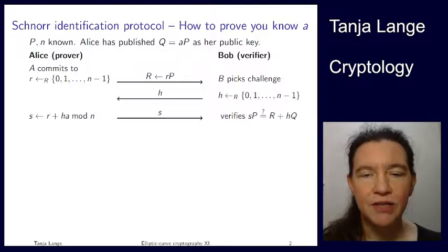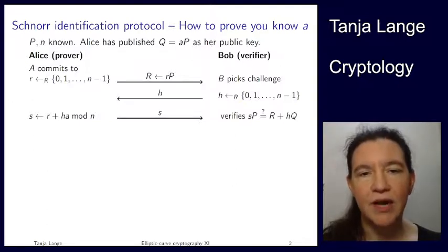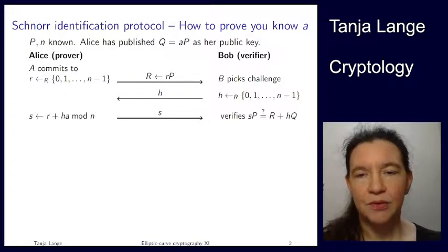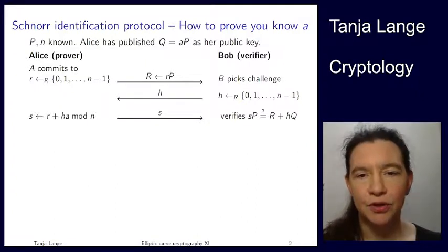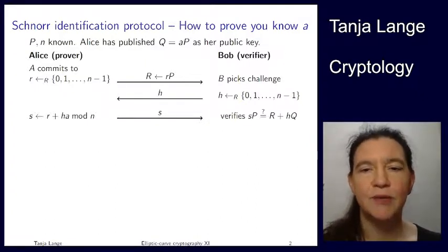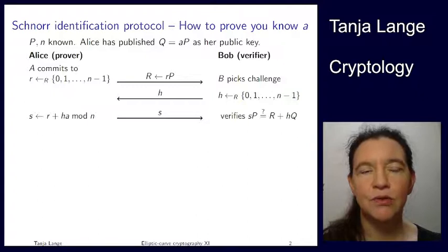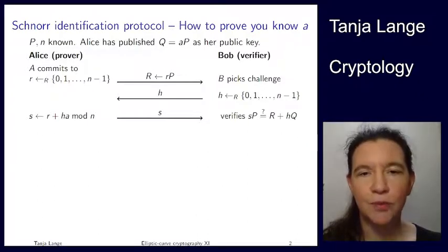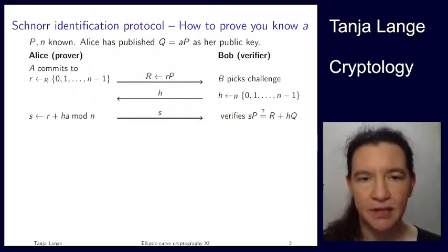An identification scheme is one where you are identified by knowing your secret key. So Alice has published her Q, which is A times P, and she is the person who knows A. So how can she prove to Bob that she actually knows A?